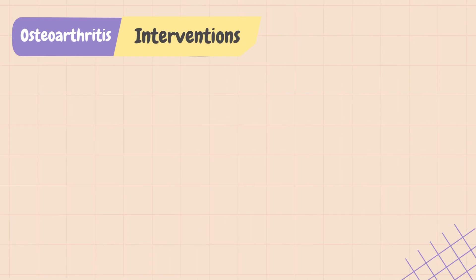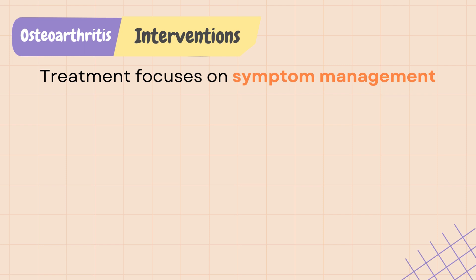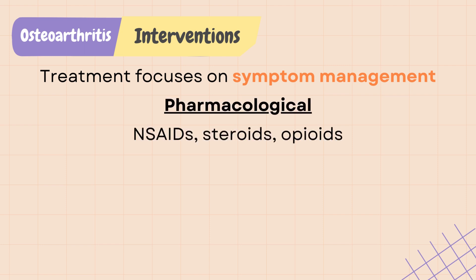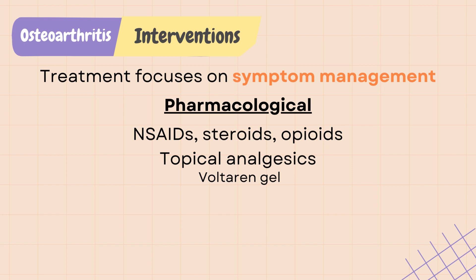There is no cure for OA; treatment focuses on symptom management. Pharmacological interventions include use of NSAIDs, steroids, and opioids such as tramadol to relieve pain. Steroids can be injected into the affected joints to relieve inflammation, and there is also a topical NSAID gel called Voltaren gel that helps with pain.